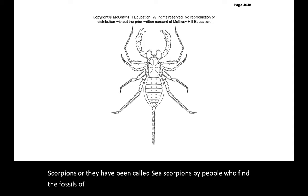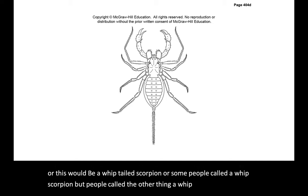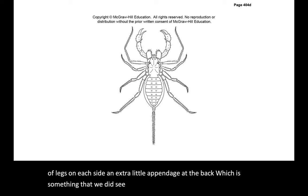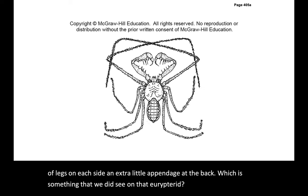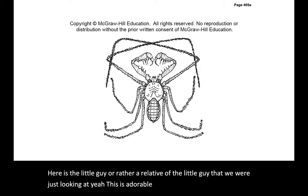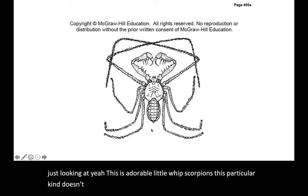Compare that to this guy, which is called a vinaigrune or this would be a whip tailed scorpion. Some people call it a whip scorpion, but people call the other thing a whip scorpion, which is somewhat different. You can see those fancy mouth parts up here, the mandibles and maxilla, you got the chelicera going on up front and they got the eight pairs of legs on each side and an extra little appendage at the back, which is something that we did see on that eurypterid.